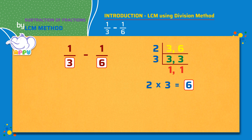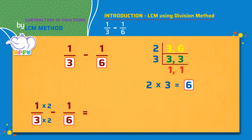Let's make the denominators the same as 6. So to change the denominator from 3 to 6, we have to multiply 3 with 2. Since we multiply the denominator with 2, we will also have to multiply the numerator with 2, which is 1 times 2, which equals 2. Now 1 by 3 becomes 2 by 6.